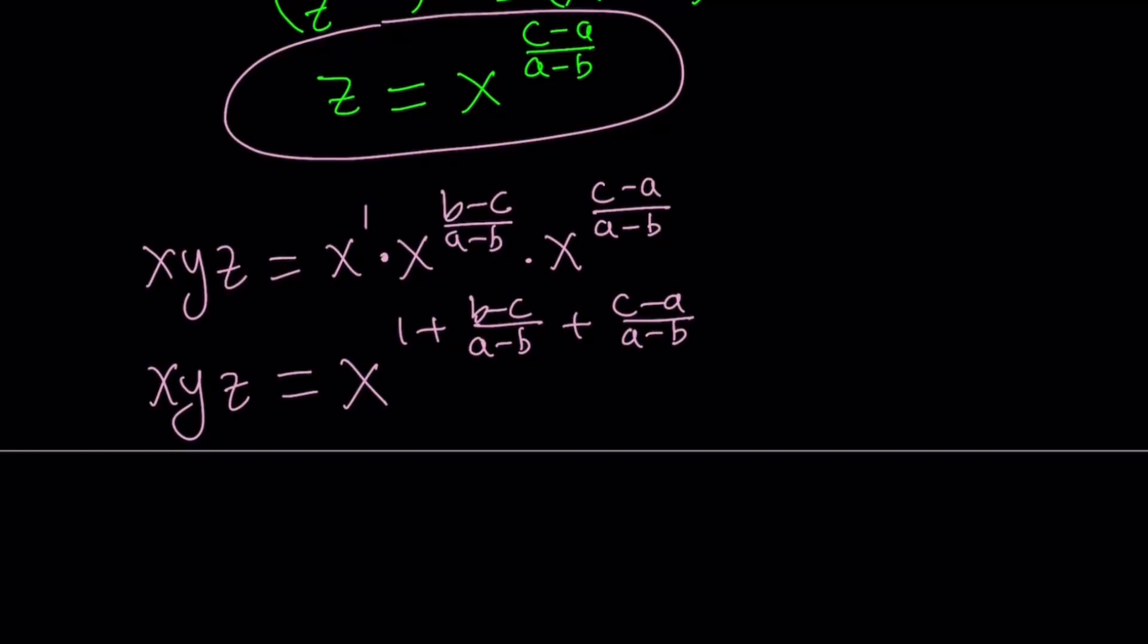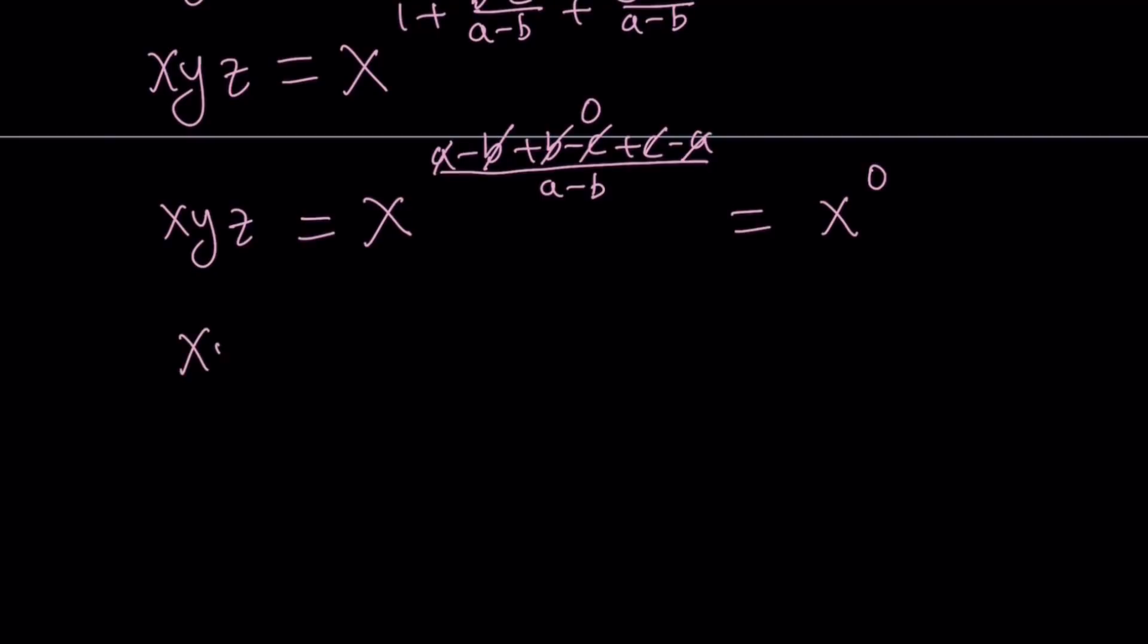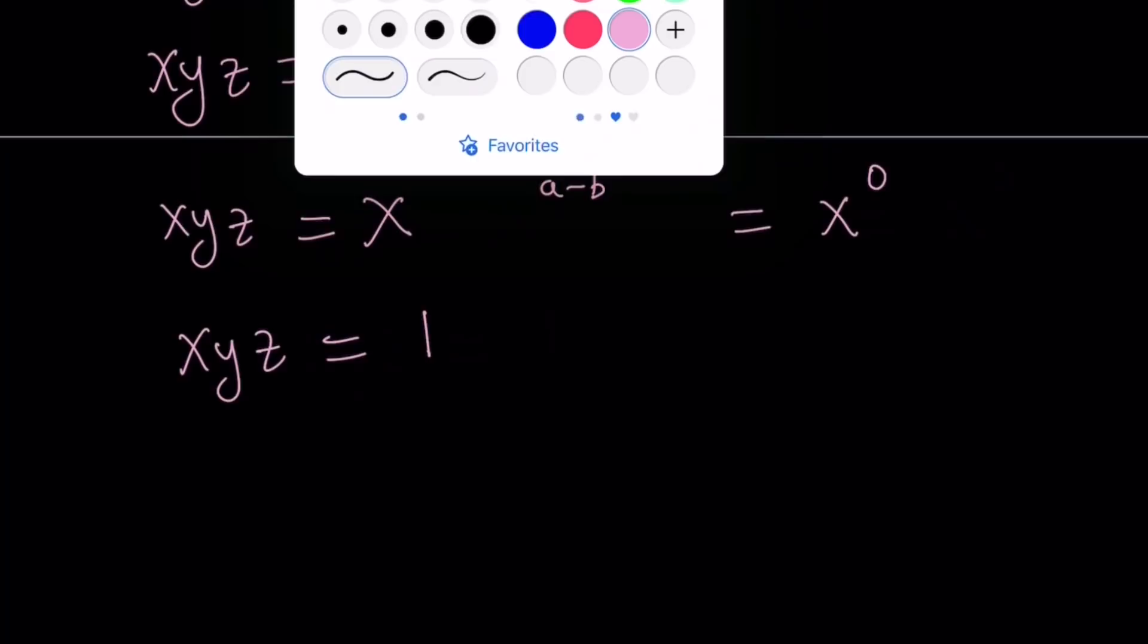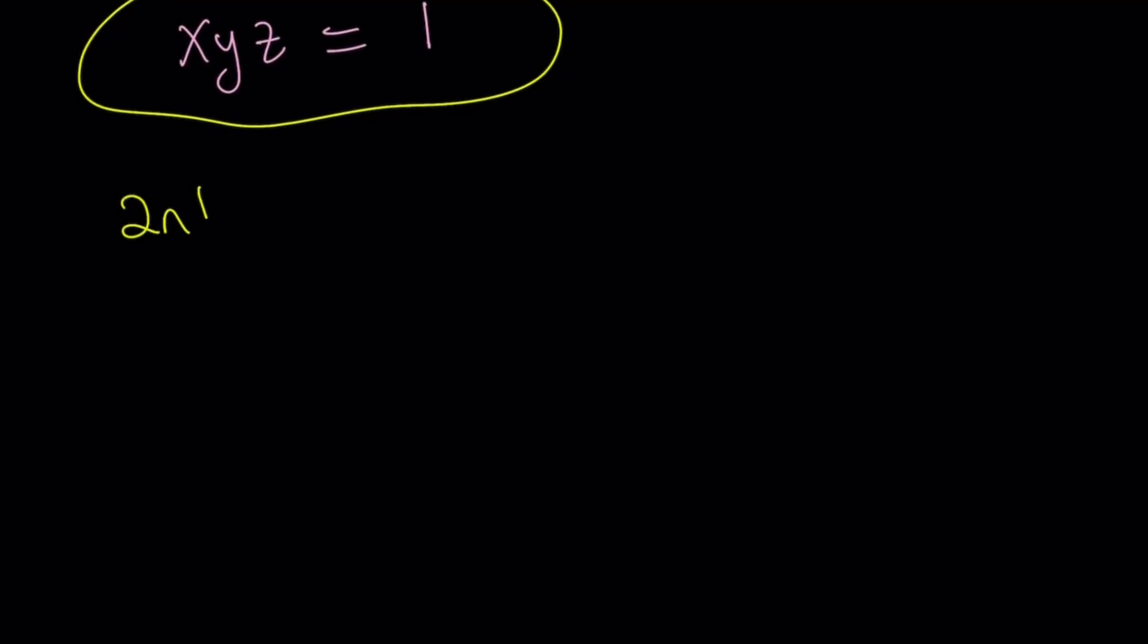Obviously we can write the 1 as a minus b over a minus b and then you'll have three fractions with the same denominator so you can add their numerators and that's going to be a minus b plus b minus c plus c minus a all over a minus b. And here b cancels out, c cancels out, and a cancels out. Everything in the numerator cancels out leaving us with 0. So this gives us x to the power 0. But x to the power 0 equals 1. So xyz equals 1 from here. Awesome. This brings us to the end of the first method and let's go ahead and talk about the second method.